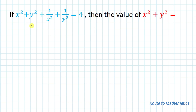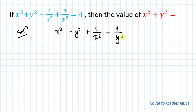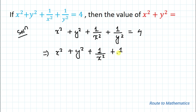We have one and only given equation: x² + y² + 1/x² + 1/y² = 4. Without any delay let's start solving. In the next step we are going to take this 4 from the right hand side to the left hand side, giving us x² + y² + 1/x² + 1/y² - 4 = 0.